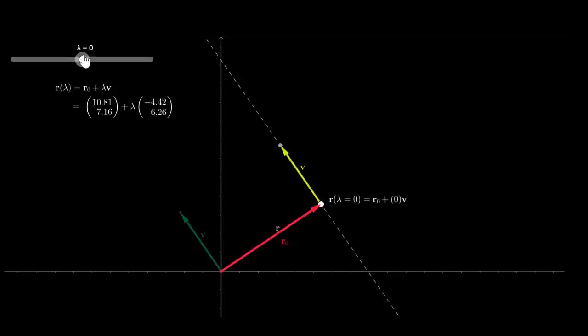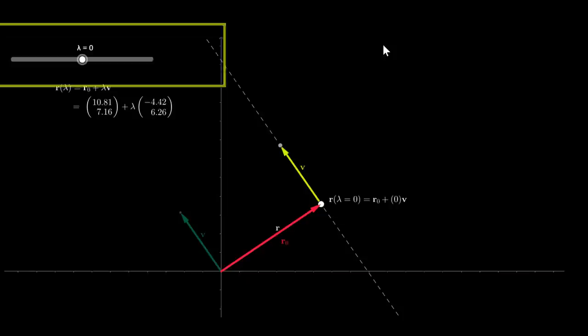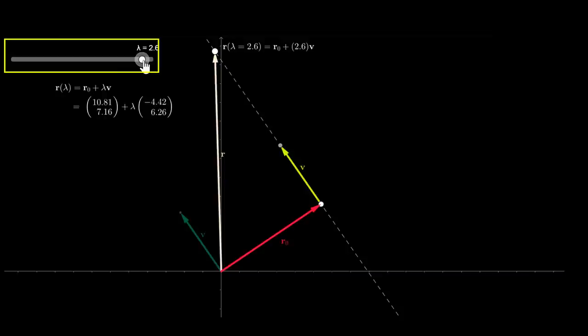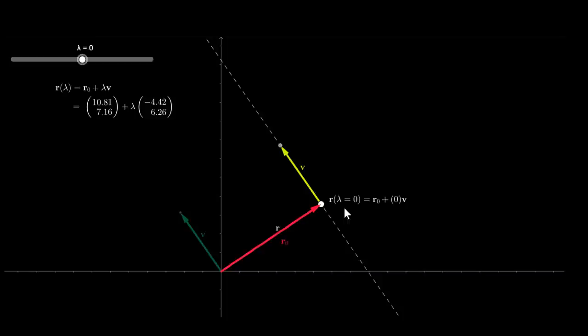r is the position vector which points from the origin to any point in the line. Lambda is our parameter — it's a real number that can take any value. You can think of a parameter as a slider. We can slide the value of lambda to any real value that we want, and this will modify the position vector r.